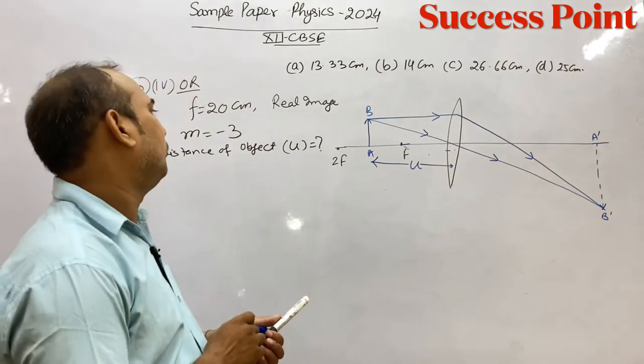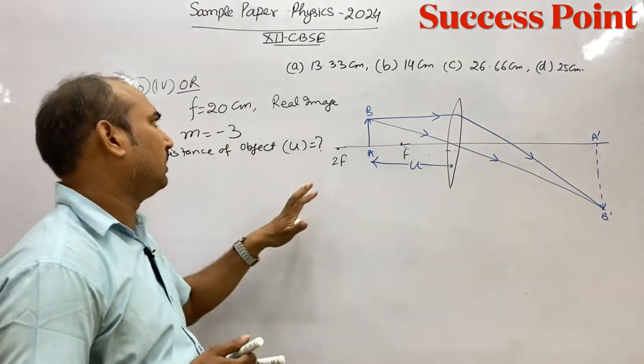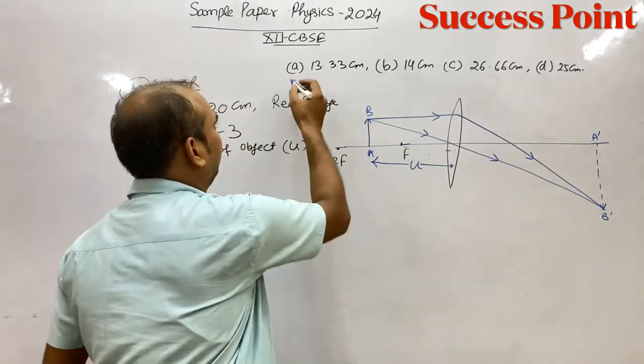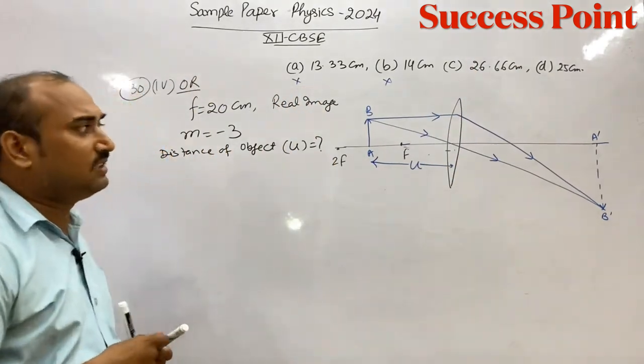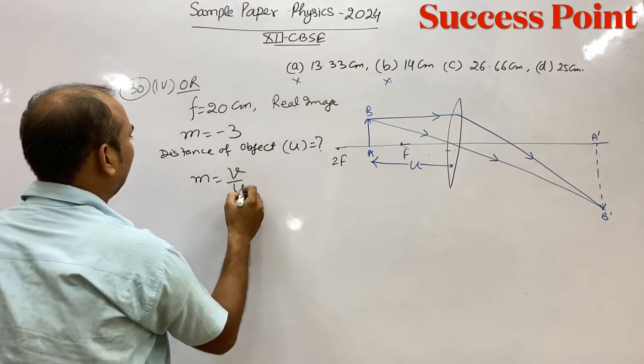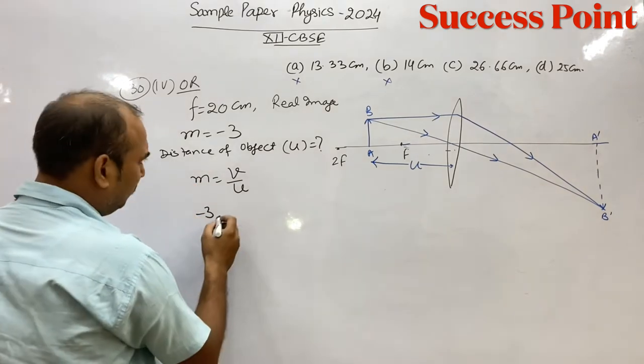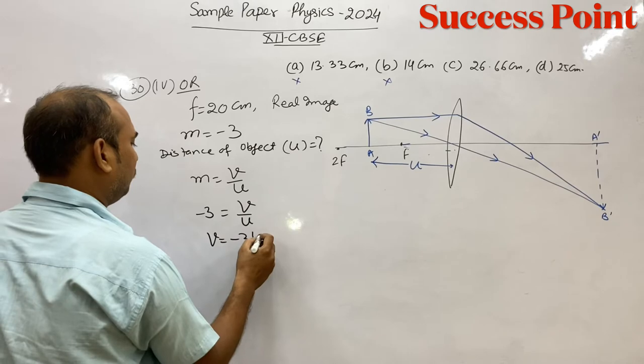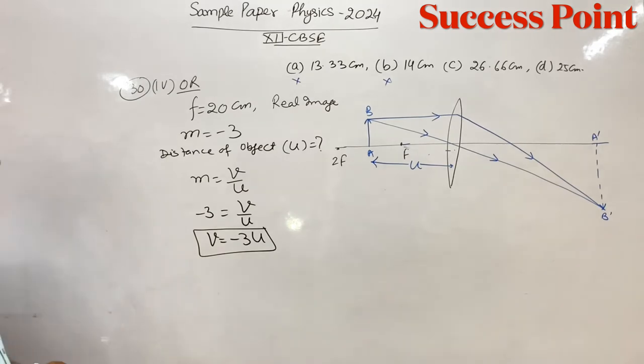So if AB was object, A dash B dash is the large image. This means the answer is 20 cm. So m equals what? M equals V upon U. And M is given as minus 3. So minus 3 equals V upon U, or V equals minus 3 U.